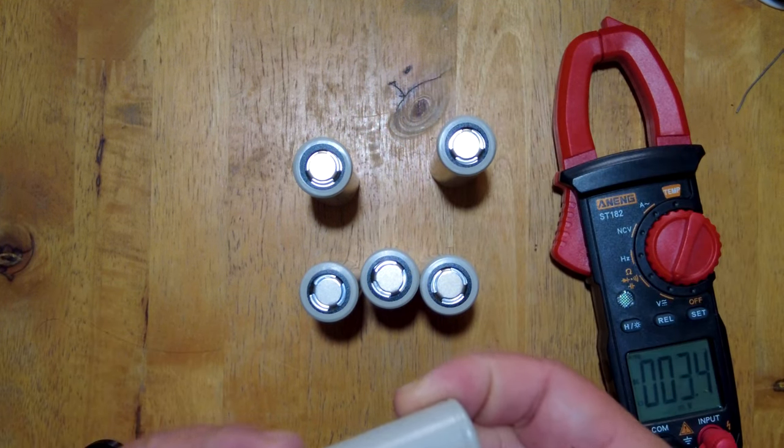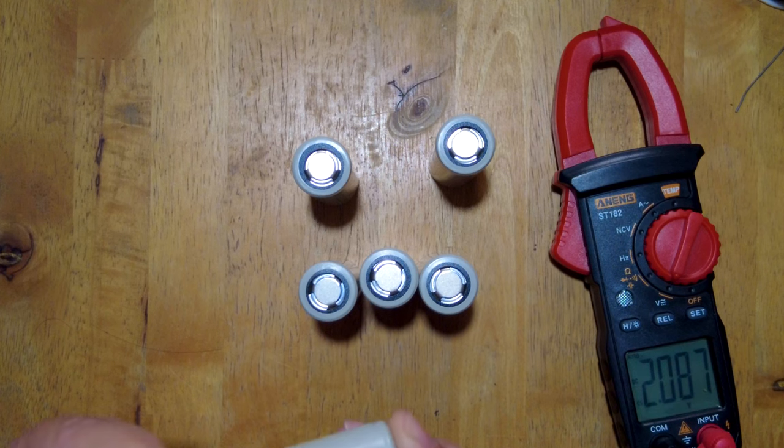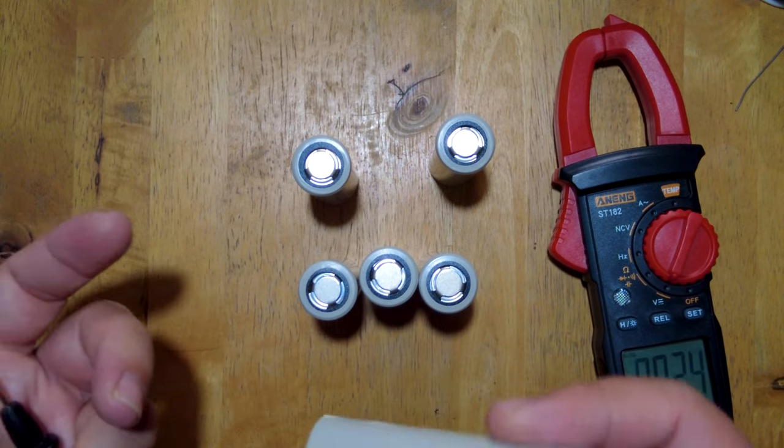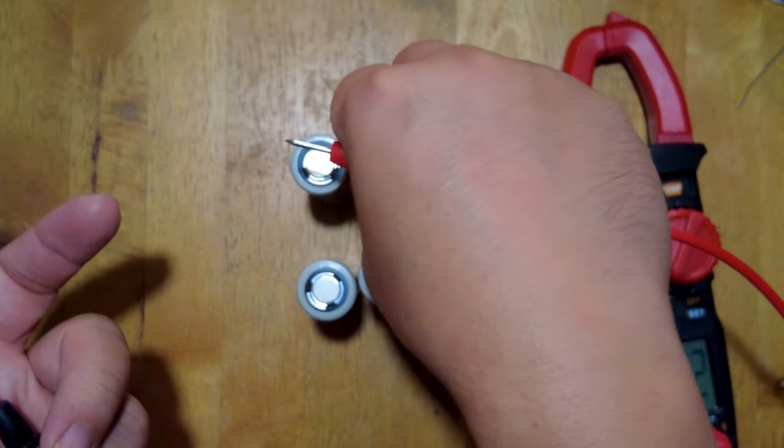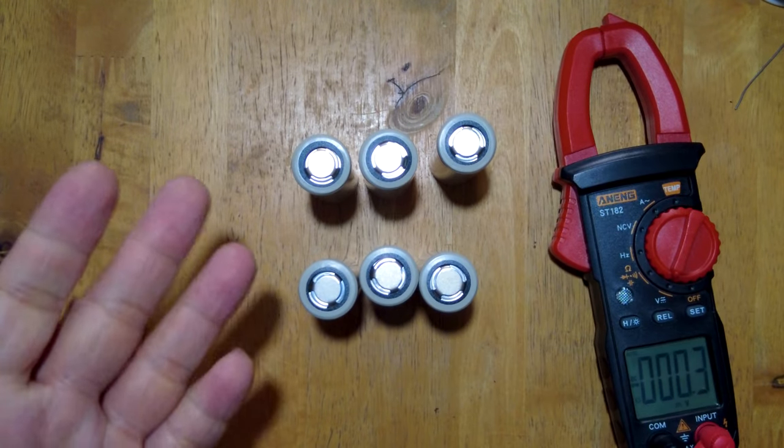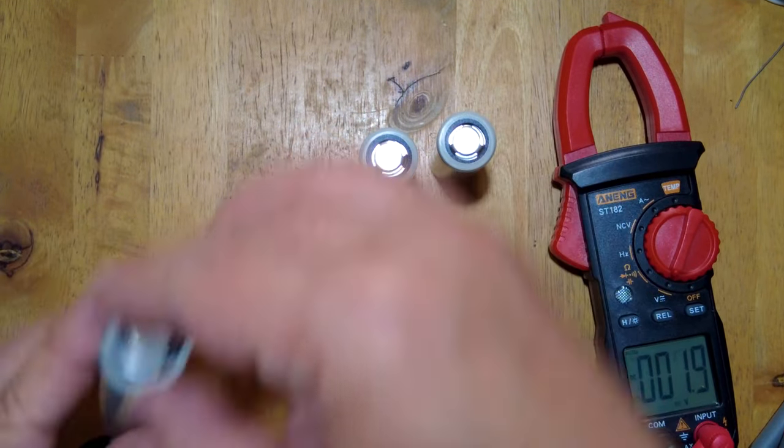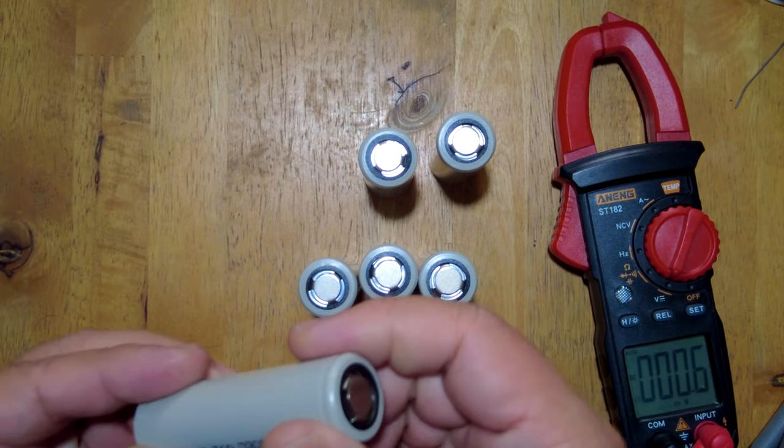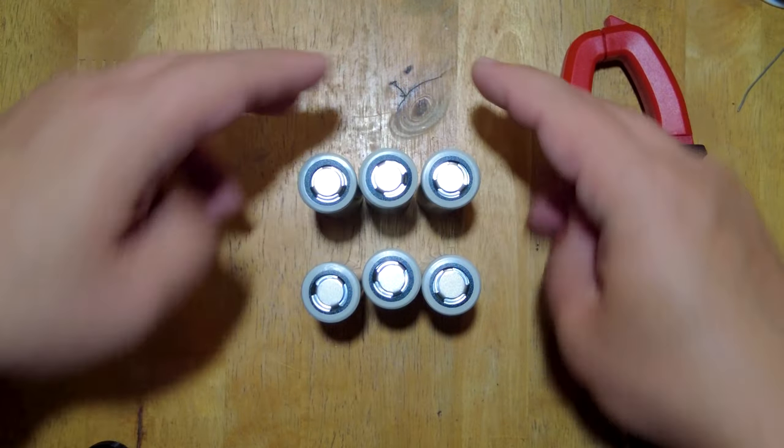We just check first if they are approximately the same voltage. Even if there's a small voltage difference it doesn't matter. You're expecting your batteries to be around 3.7, 3.8, maybe 3.85 max for brand new cells like these.